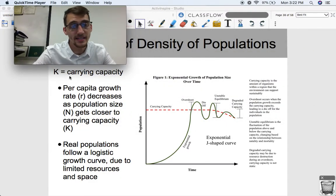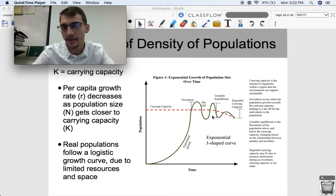So as I said, K is representing carrying capacity. And a couple things about logistic growth is that per capita growth rate, which is R, decreases as population size gets closer to carrying capacity. So as the population gets closer to carrying capacity, growth rate slows down.